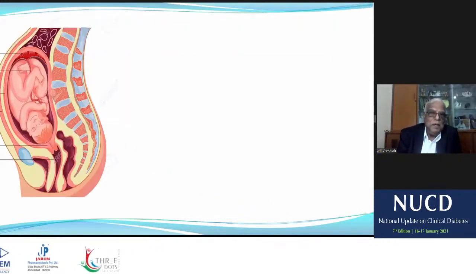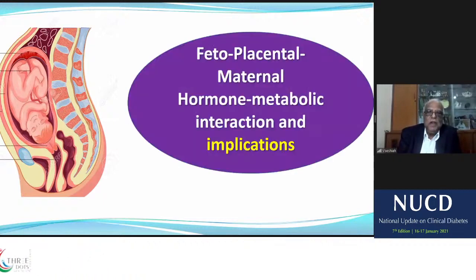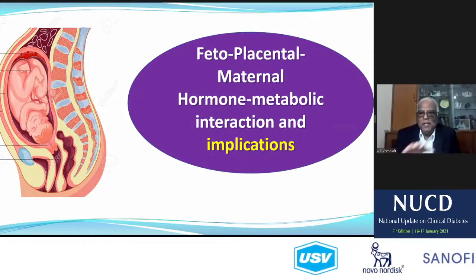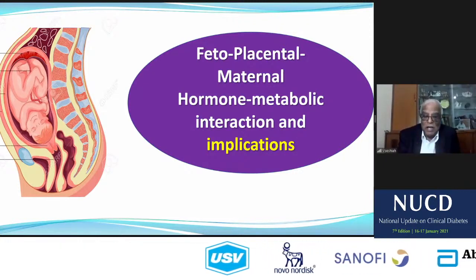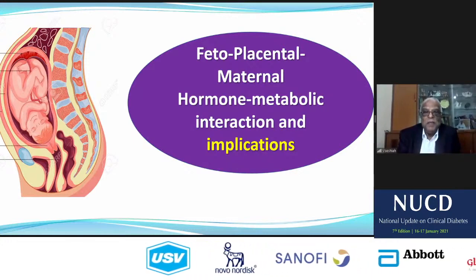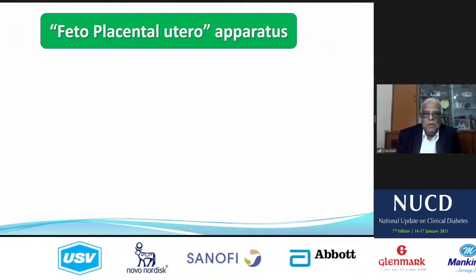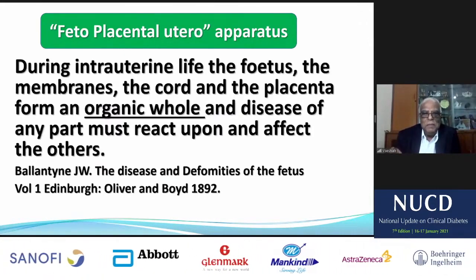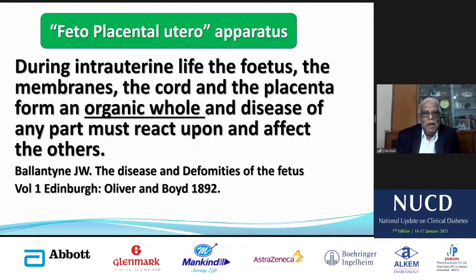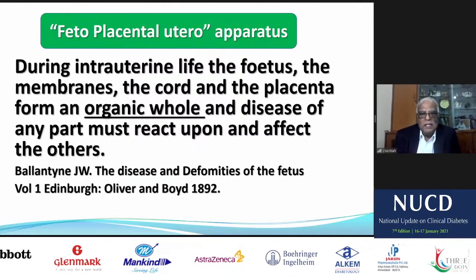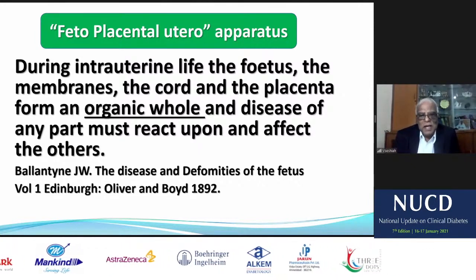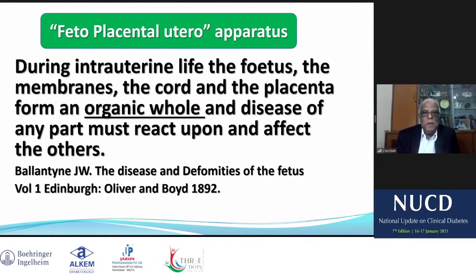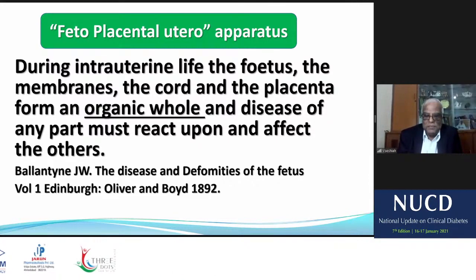The most important organ in the development of the fetus is the placenta. We call this feto-placental-maternal hormonometabolic interaction. Many things interact, and we will try to see how we can come to a conclusion. During intrauterine life, the fetus, the membranes, the cord, and the placenta form an organic whole, and disease of any part must react upon the fetus. That is why we call it the fetoplacental-maternal and fetoplacental-uterine apparatus.